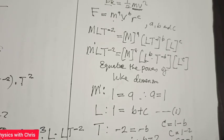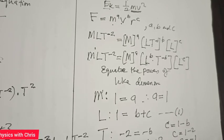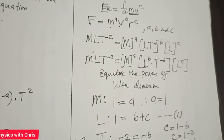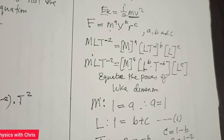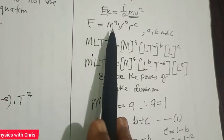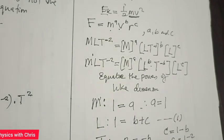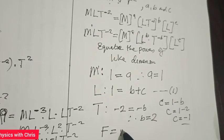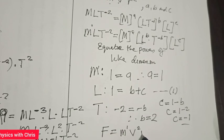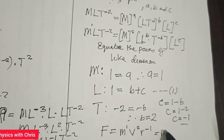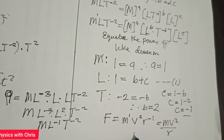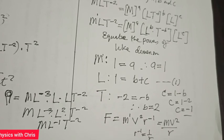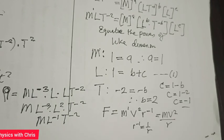With constants a = 1, b = 2, and c = −1, we can now arrive at the exact form of the equation. Substituting back: F = m¹ × v² × r⁻¹, which gives F = mv²/r, because r to the power of −1 appears as 1/r. So using dimensional analysis, we've derived the exact form of the equation for centripetal force acting on a body moving in a circle.